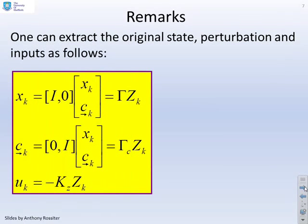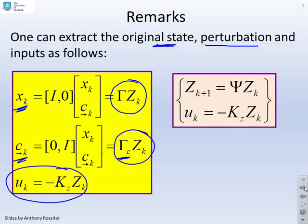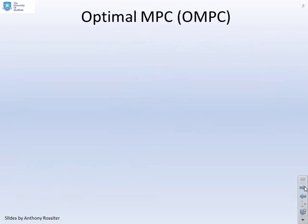If I want to extract the original state, or the original perturbation, or the inputs, then what you'll find is I can find a gamma, such that gamma zk is xk. Or I can find a different gamma here, I've called it gamma subscript c. So the gamma c zk gives me c future, or I could just find an individual c if that's what I wanted. And similarly, I can find an expression for uk. And just a reminder, here are my augmented model. I've got zk plus 1 equals psi zk, and uk equals minus kz zk.